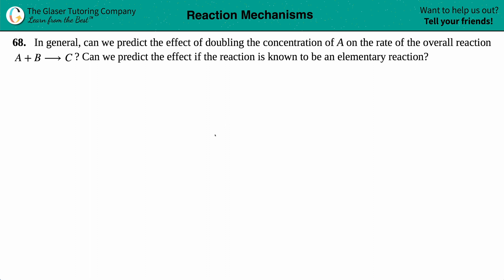Number 68. In general, can we predict the effect of doubling the concentration of A on the rate of an overall reaction, A plus B yields C? And then can we predict the effect if the reaction is known to be an elementary step or an elementary reaction?